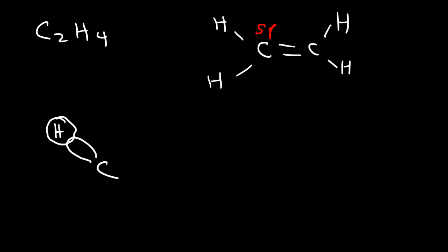The carbon is sp2 hybridized and hydrogen has an s hybridization. Once we mix the s orbital with the sp2 orbital, that produces a sigma bond.